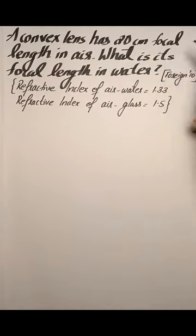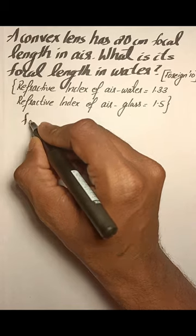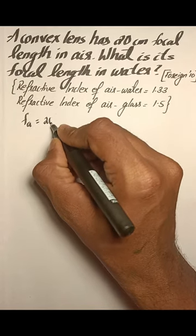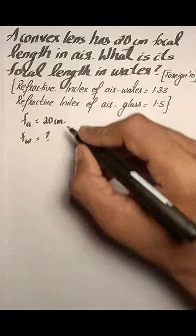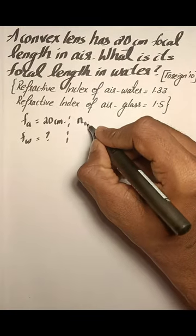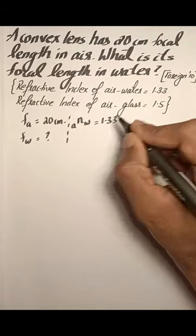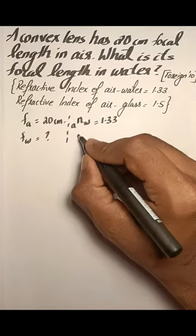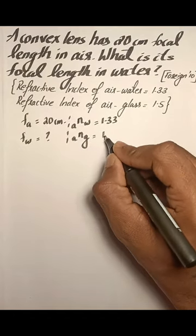A convex lens has a focal length of 20 centimeters in air. What is its focal length in water? The refractive index of water with respect to air is 1.33, and the refractive index of glass with respect to air is 1.5.